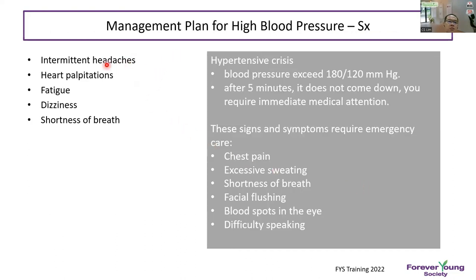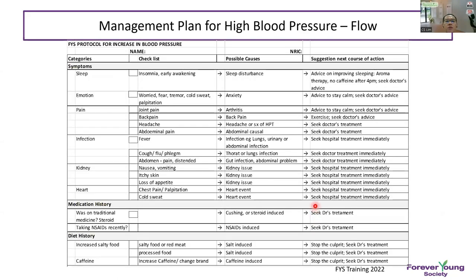Symptoms of high blood pressure include intermittent headache, palpitation, fatigue, giddiness, and breathlessness. For hypertensive crisis, symptoms include chest pain, excessive sweating, pulmonary edema, shortness of breath, facial flushing, blood spot in the eye (conjunctival hemorrhage), and difficulty speaking due to impending or actual stroke. The flowchart for hypertensive management will also be converted into a Google form.